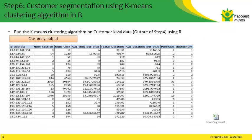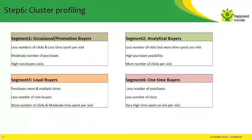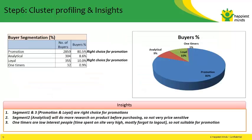We have done customer segmentation using the K-Means clustering algorithm in R, classifying customers as occasional promotion buyers, analytical buyers, loyal buyers, and one-time buyers. The various metrics captured for different segments are given in the following slides.